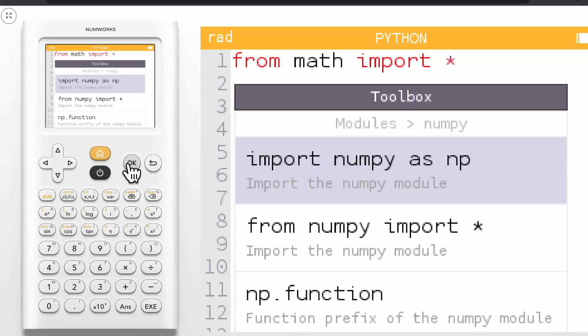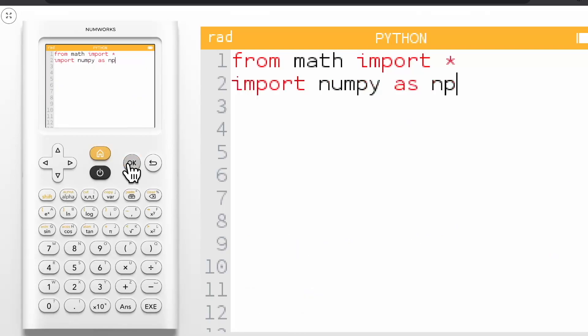For this example, we will use Import NumPy as NP. Click OK on this option. Then click Execute to space the next line before continuing the script.